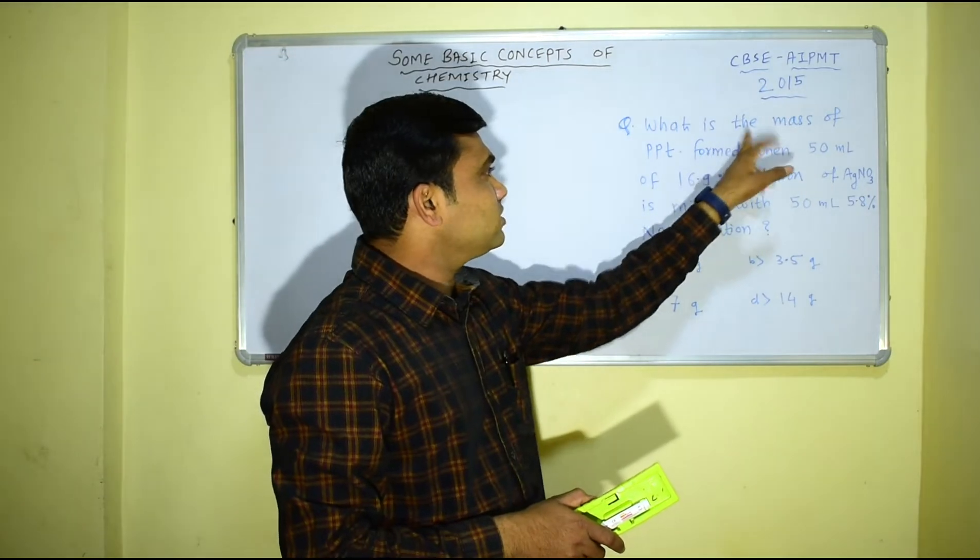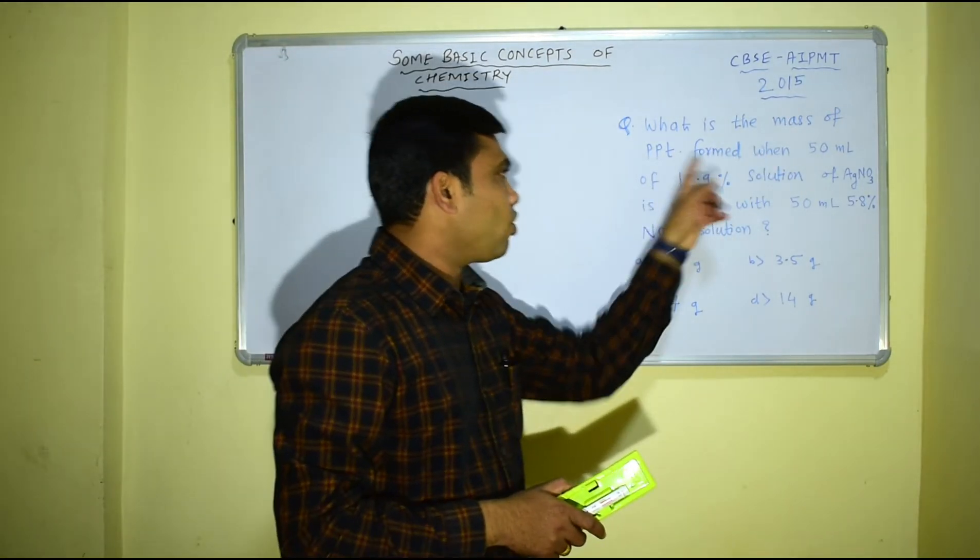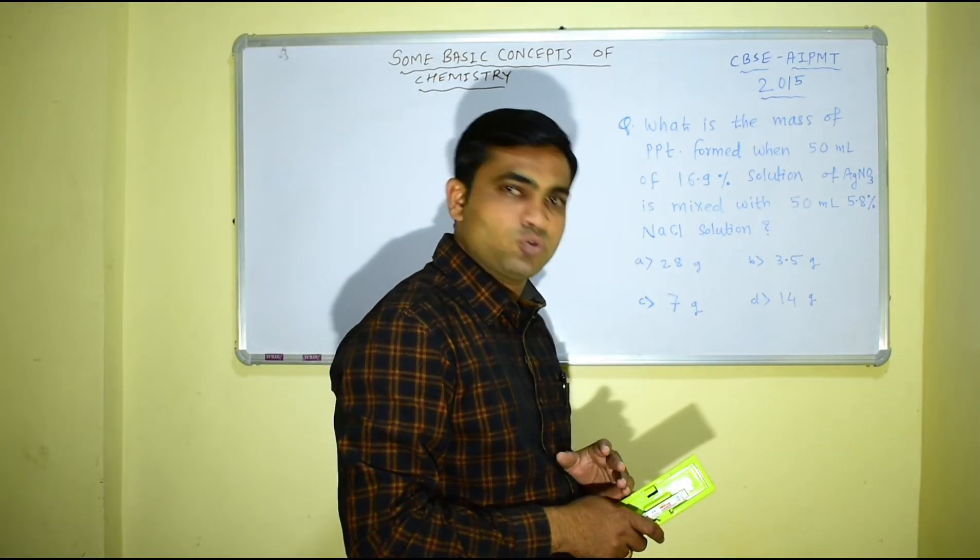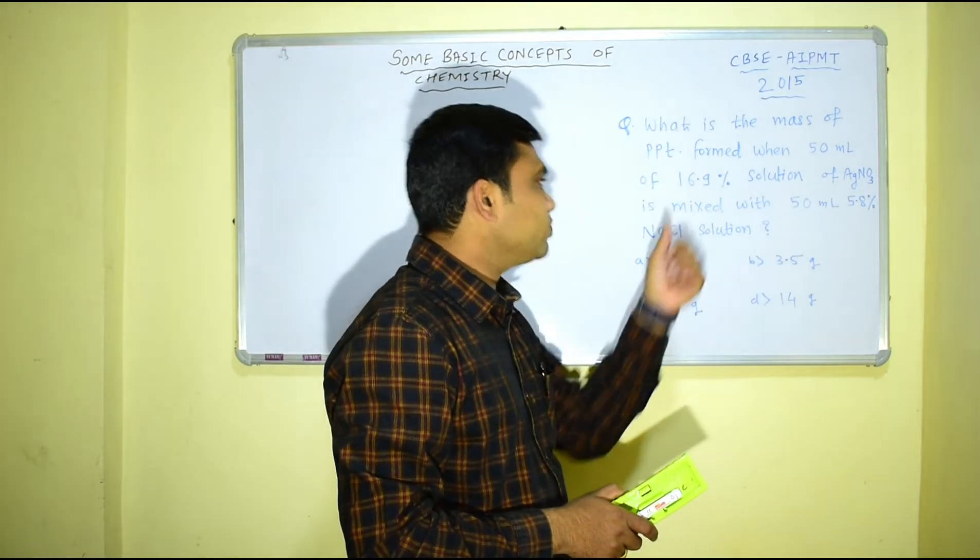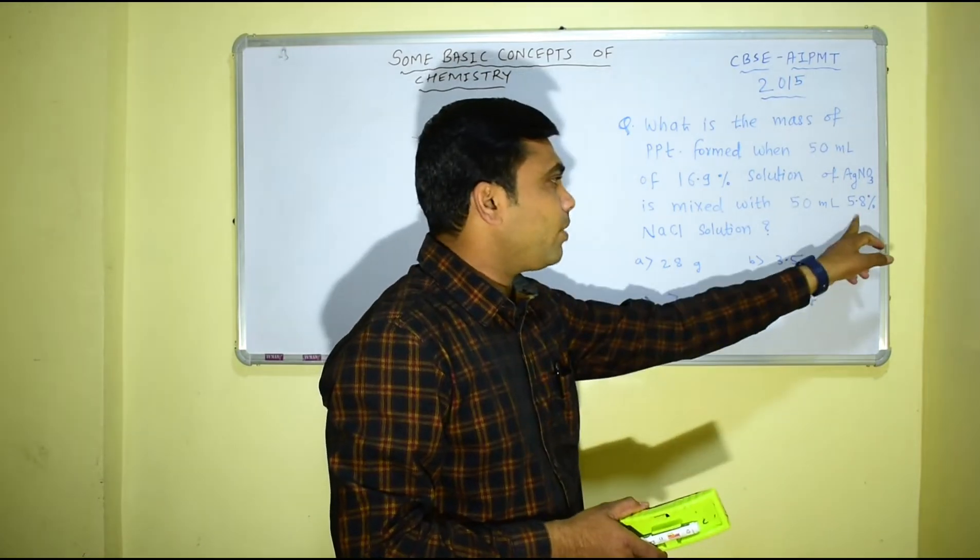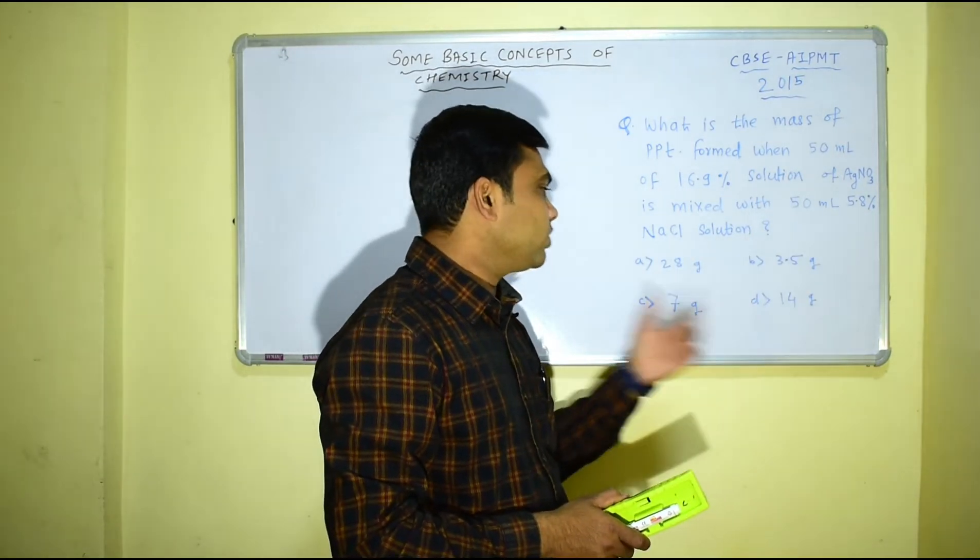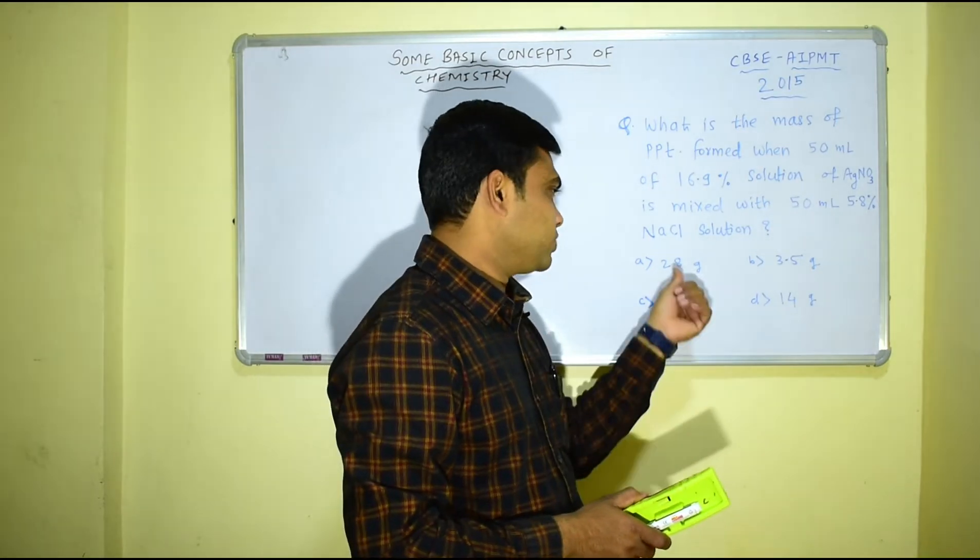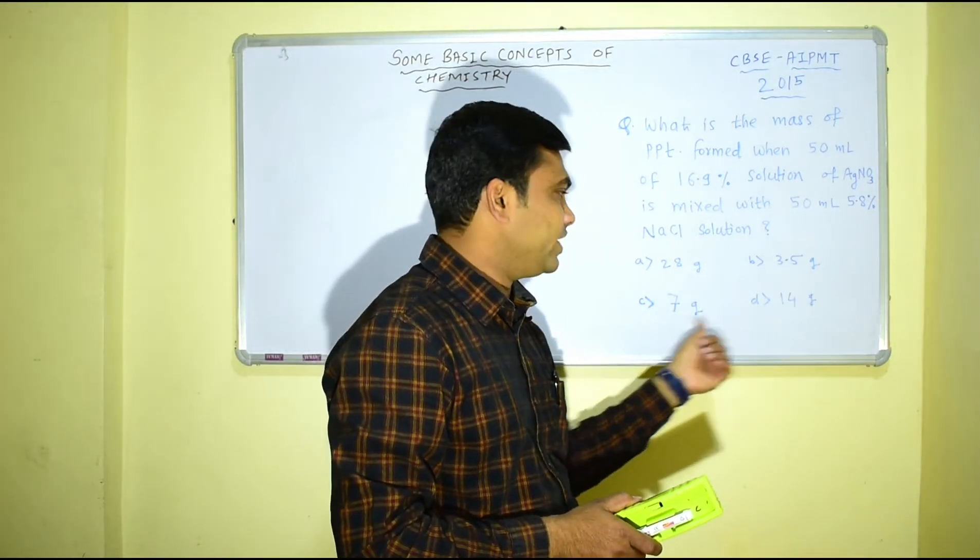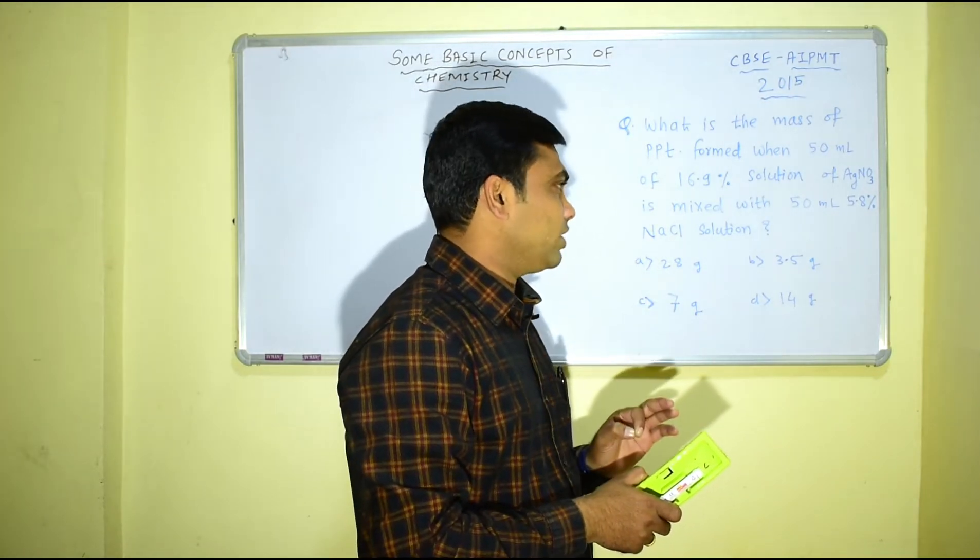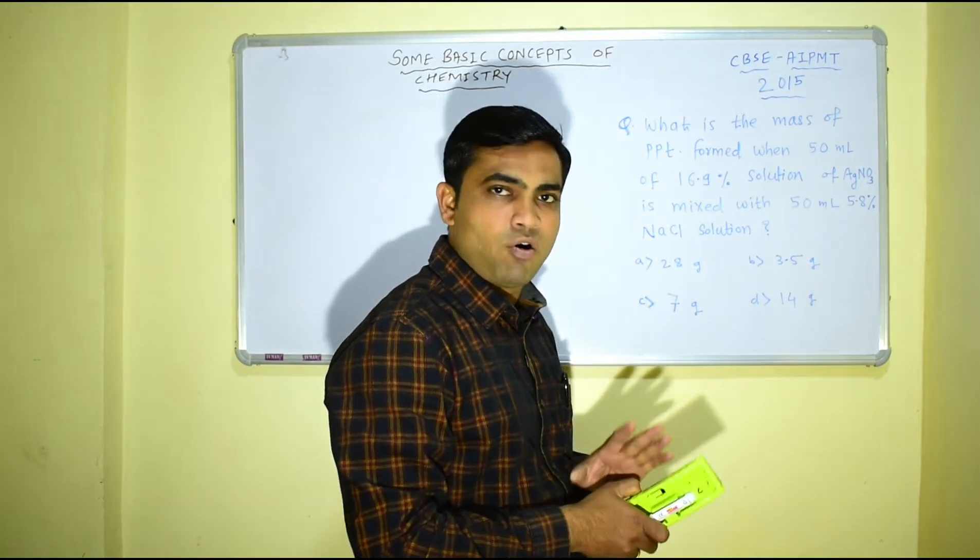What is the mass of precipitate formed when 50 ml of 16.9 percent solution of silver nitrate is mixed with 50 ml of 5.8 percent sodium chloride solution? And we have given the different options like 28, 3.5, 7, and 14. We have to find what mass of silver chloride AgCl will form as a precipitate.